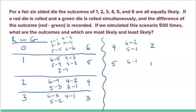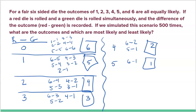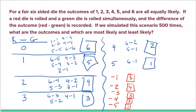So I have differences of zero, one, two, three, four, and five possible — with six, five, four, three, two, and one outcomes respectively. But also negative differences are possible: negative one, negative two, negative three, negative four, negative five. The good news is the counts are symmetric — if there are five ways to get a difference of one, there are also five ways to get negative one.